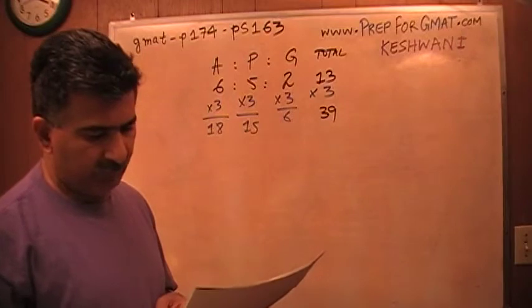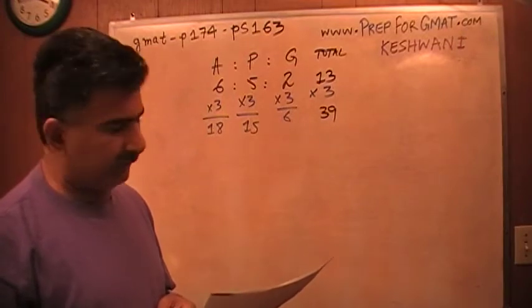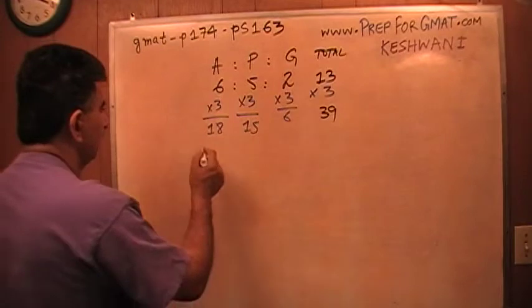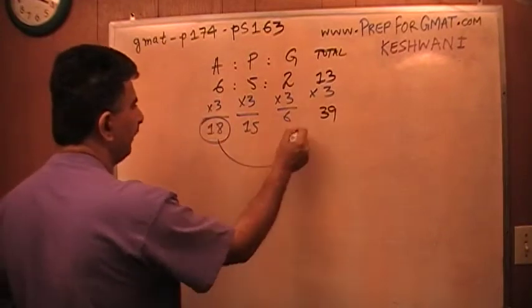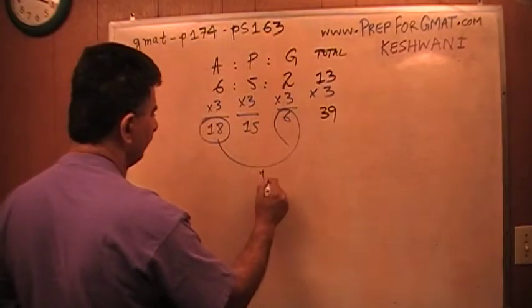The mixture includes how many more pounds of apples than grapes. Oh, this is too simple. There are 18 pounds of apples and 6 pounds of grapes. The difference is 12 pounds. That's it. We are done.